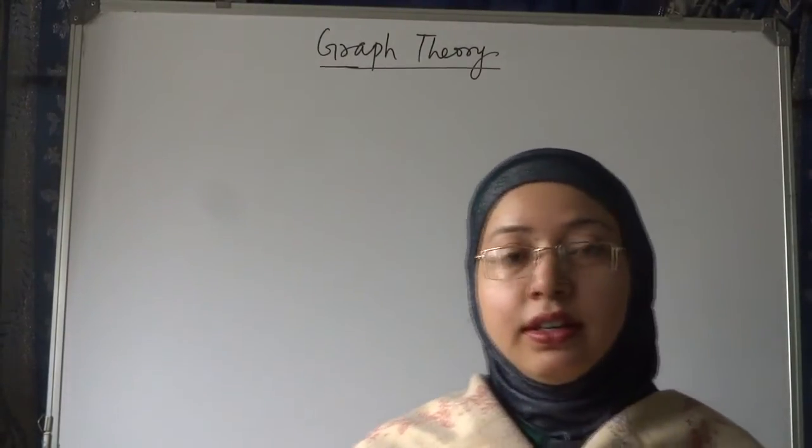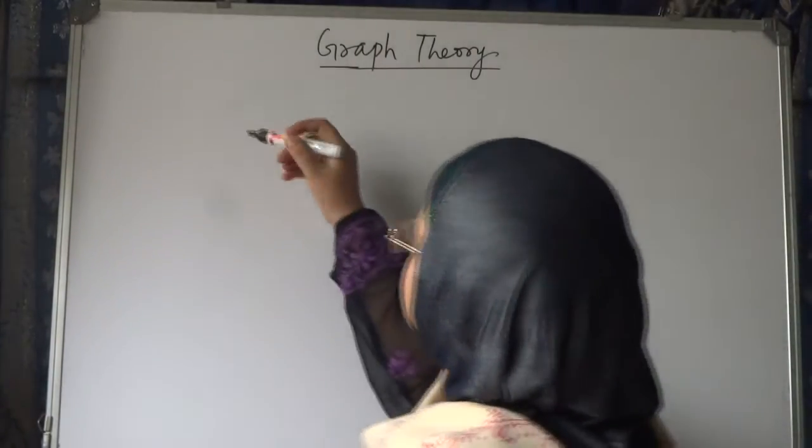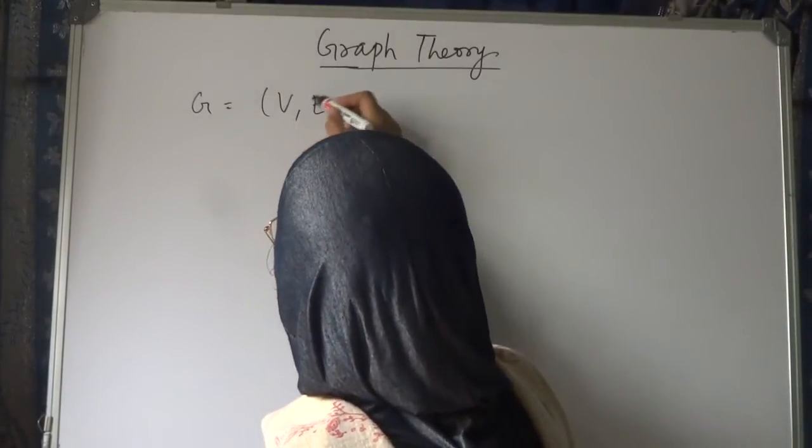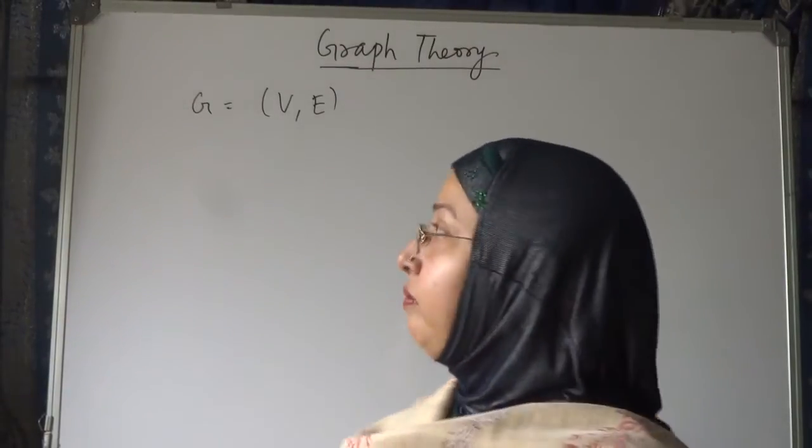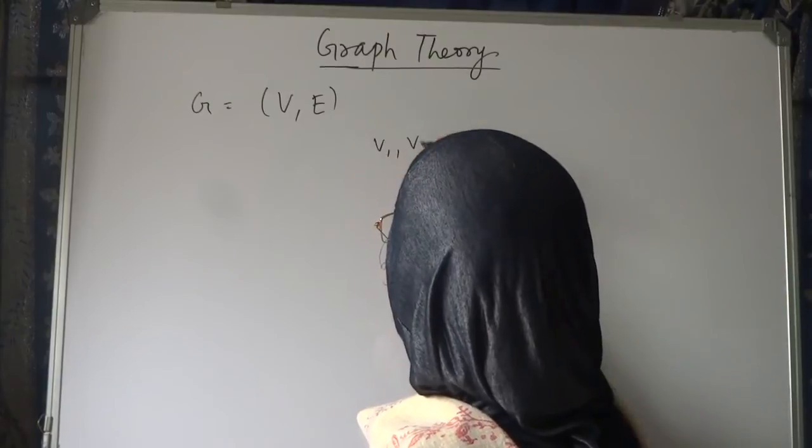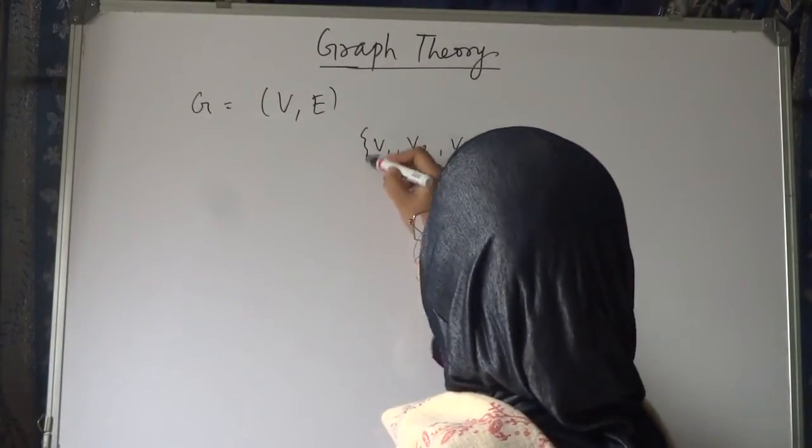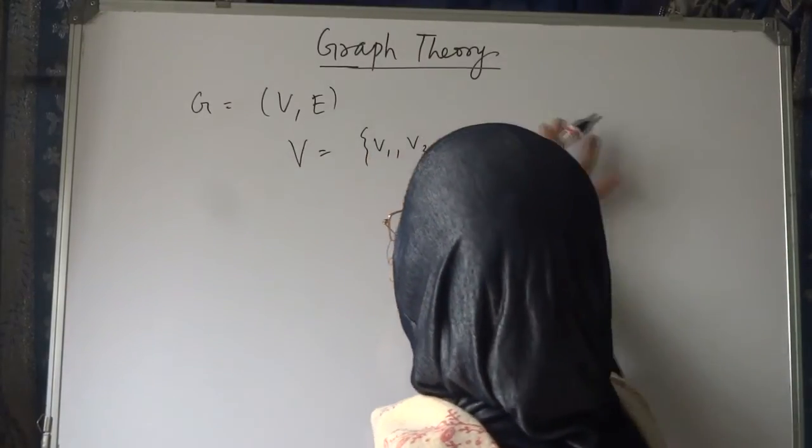First of all, let me tell you what is graph. Graph is a collection of vertices and edges. What are vertices? Vertices are the nodes which are denoted by V1, V2, V3 dot dot dot Vn, and it is denoted by the set of vertices V.